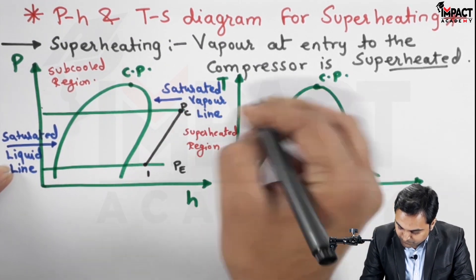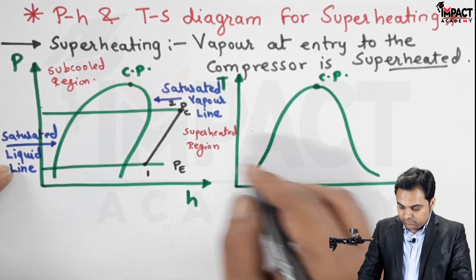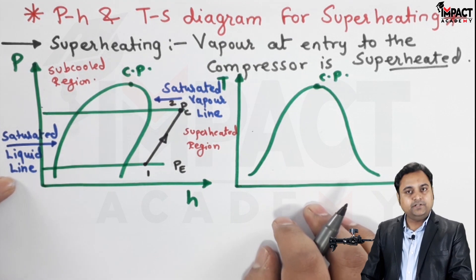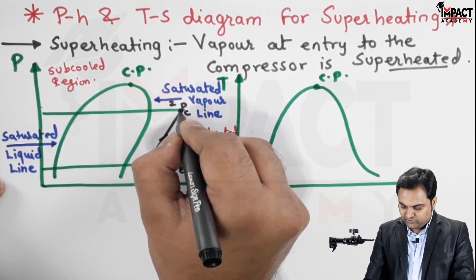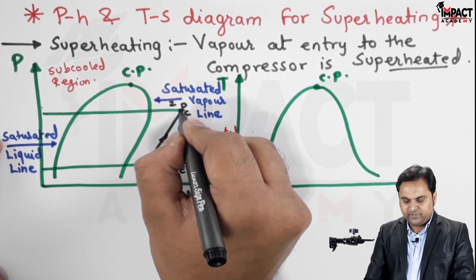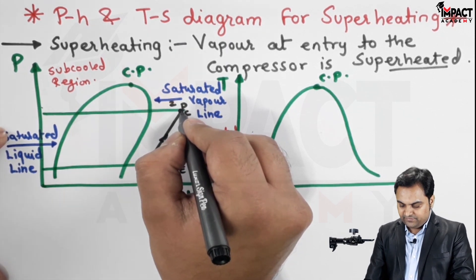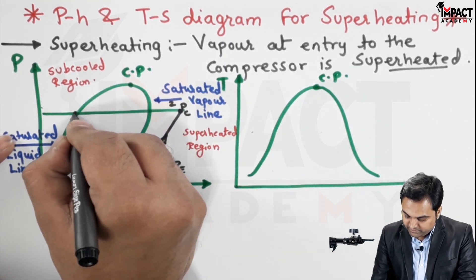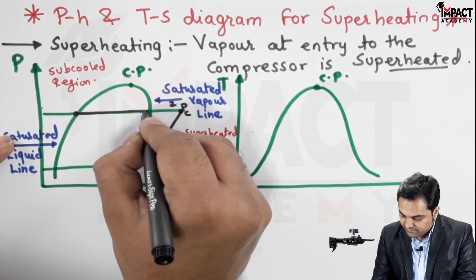This is point two, indicating the superheated state after compression. After coming out from the compressor at point two, the vapor enters the condenser where it condenses into saturated liquid, so point two moves to the left up to the saturated liquid line.